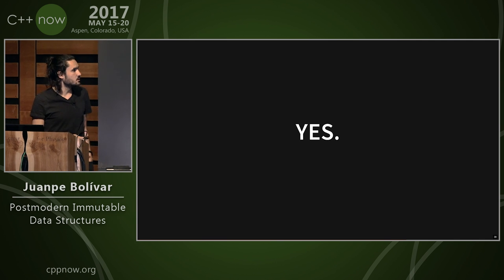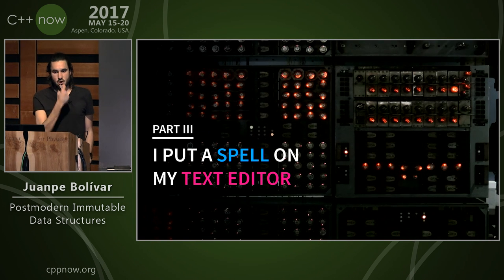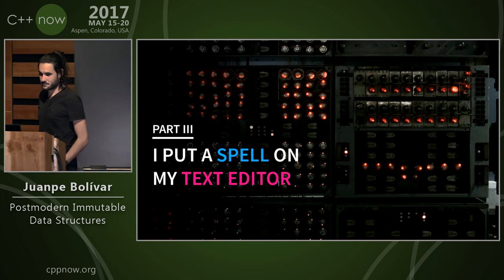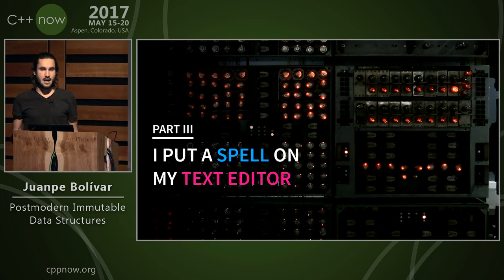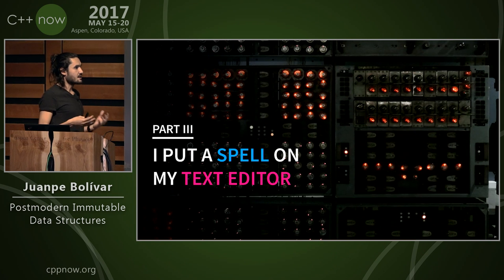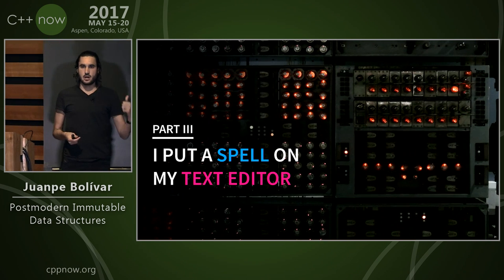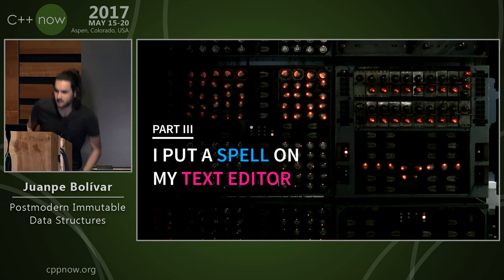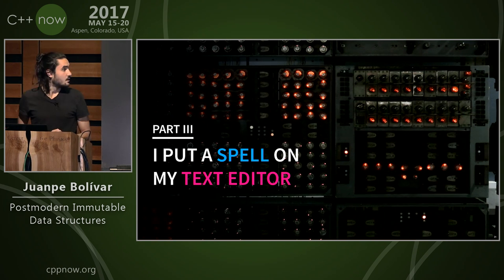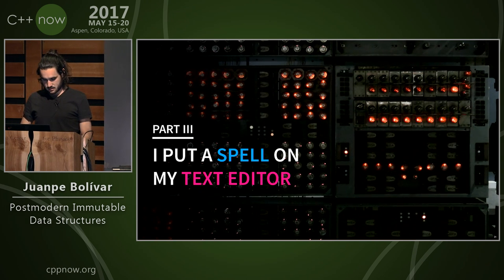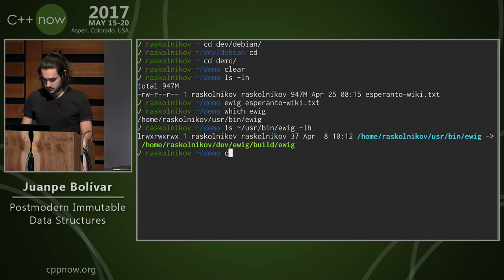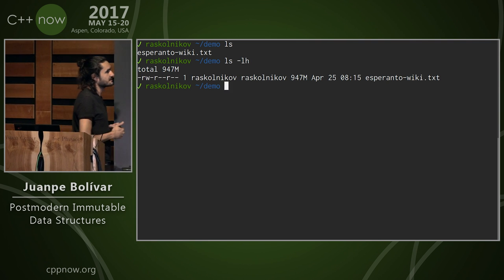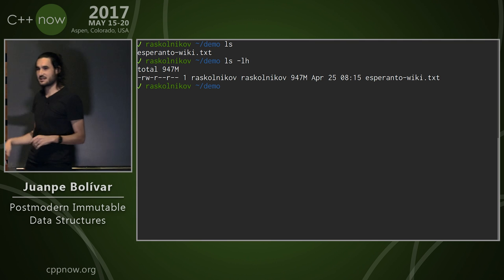I put these magic vectors in a text editor to demonstrate. I actually wrote a simple program — a text editor whose architecture and data model are based purely on these immutable data structures. I'm going to do a small demo. I have this file: it's a text file containing all of the Esperanto Wikipedia, almost one gigabyte big. I challenge you to edit it with your favorite text editor.